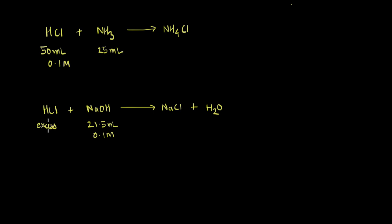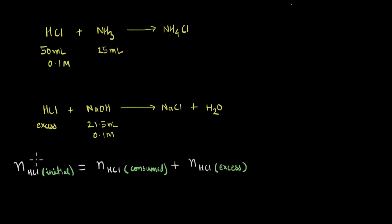Since we know that whatever was the excess amount was totally neutralized by 21.5 ml of 0.1 molar NaOH, and since the mole ratio here is 1:1, we can calculate the number of moles of NaOH consumed, which gives us the number of excess moles of HCl.